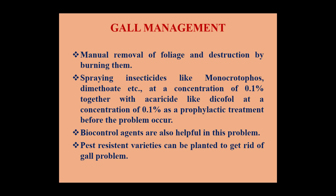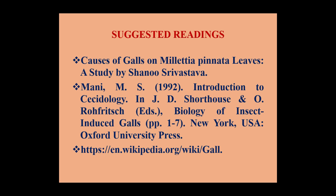Gall management: How can we control the development of these leaf galls? Manual removal of foliage and destruction by burning may be one of the methods to control the leaf gall. Besides this manual method, spraying insecticides like monocrotophos and dimethoate at a concentration of 0.1%, together with acaricides like dicofol at a concentration of 0.1%, as a prophylactic treatment before the problem occurs. Biocontrol agents are also helpful in the control of this disease. Pest-resistant varieties can be planted to get rid of the gall problem. For further readings, I would suggest these links and research papers — please go through them and benefit from them.